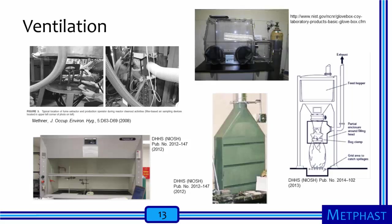A ventilated glove box can be thought of as virtually a complete enclosure. Workers can put containers of potentially toxic materials inside the glove box, use the gloves to open the containers, manipulate the materials with any releases into the air being drawn away by the ventilation, close the containers again, and then remove the containers safely from the glove box.